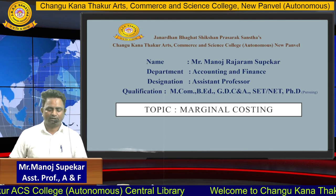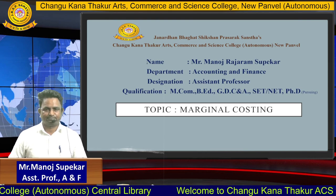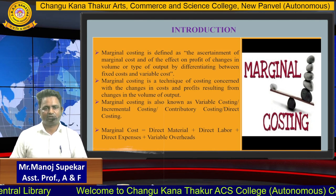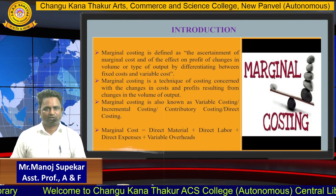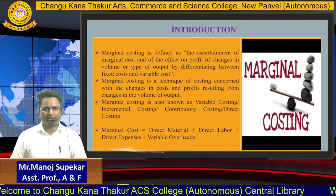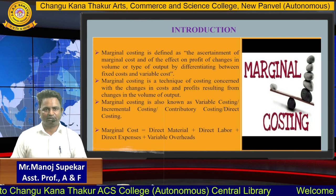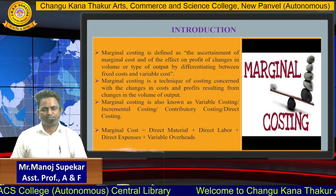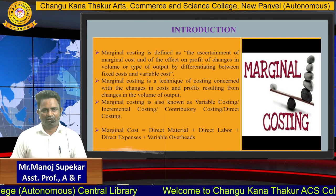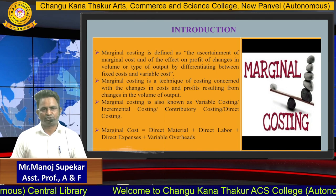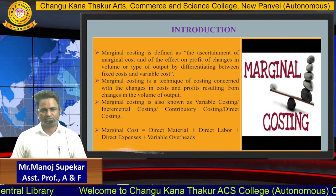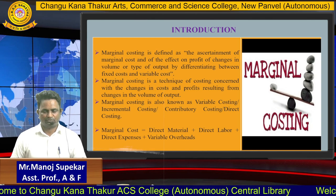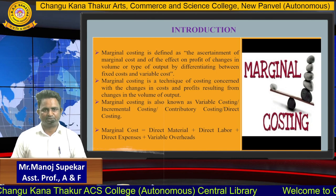Marginal costing is a technique of costing. What is the exact definition of marginal costing? Let us understand this concept through an example. My total manufacturing quantity is suppose 100, and for manufacturing each product, suppose 2 rupees is the cost of production. That means my total cost of production will be 200 rupees for 100 products.